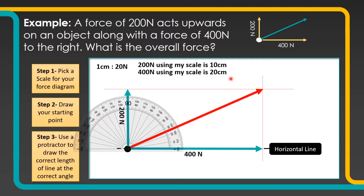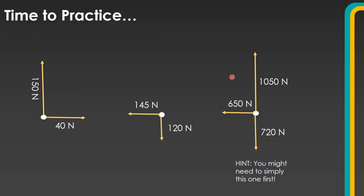What we'd like you to do now is practise with three examples. For each example, you're going to need to initially draw the two forces shown to scale on your paper, do your dotted lines going across, and then find your resultant force. The first one is going to be up to the right.